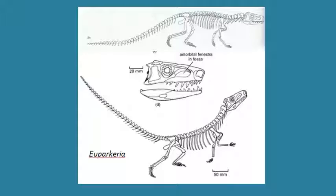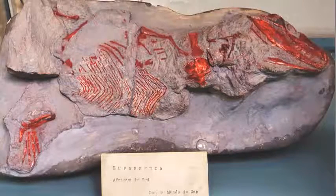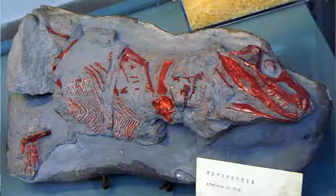The Archosauromorpha has some additional traits that unite them as a group, which can be seen in this illustration of a skeleton of a primitive member called Euparkeria. Euparkeria is known from good material from the Middle Triassic of South Africa and Europe. Its teeth are in sockets, unlike lizards and snakes — this condition is called thecodont. The group of ancestors to dinosaurs were formerly called the thecodonts, which is no longer used since it is a paraphyletic group.